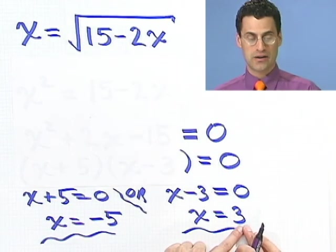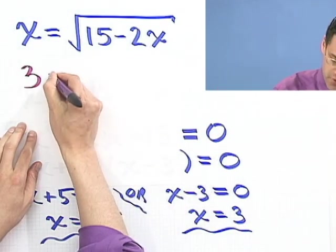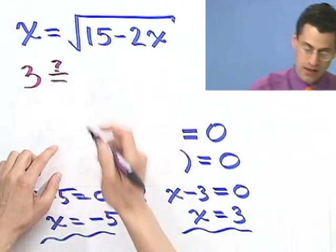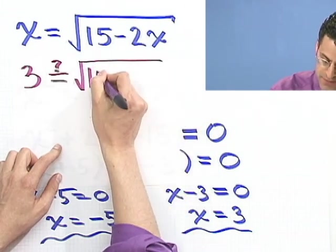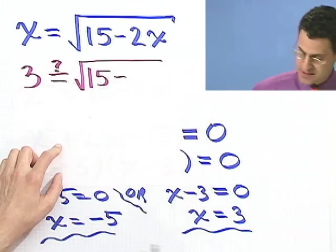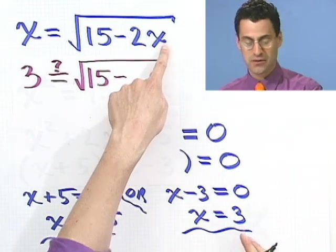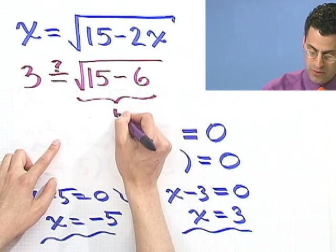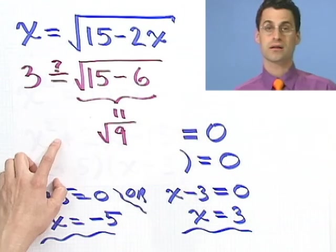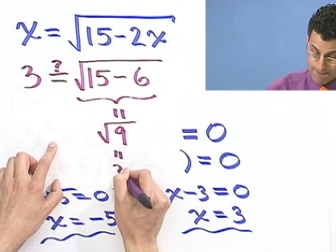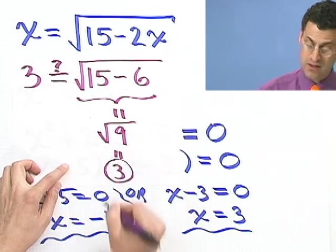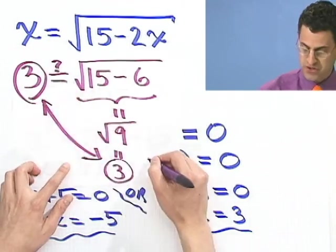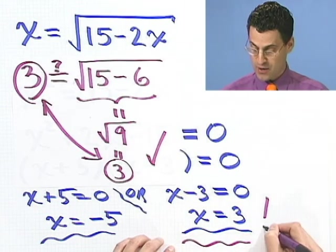If I put in an x equals 3 everywhere, on this side I would have a 3. And the question is, does that equal when I put in a 3 on this side? Well, if I put in a 3 on this side, I see 15 minus 2 times 3, which is 6. So this side here would equal the square root of 9. And you'll notice the square root of 9 equals 3. And so I see that 3, the right-hand side, does equal 3, the left-hand side. So in fact, this checks. So this is really one answer.